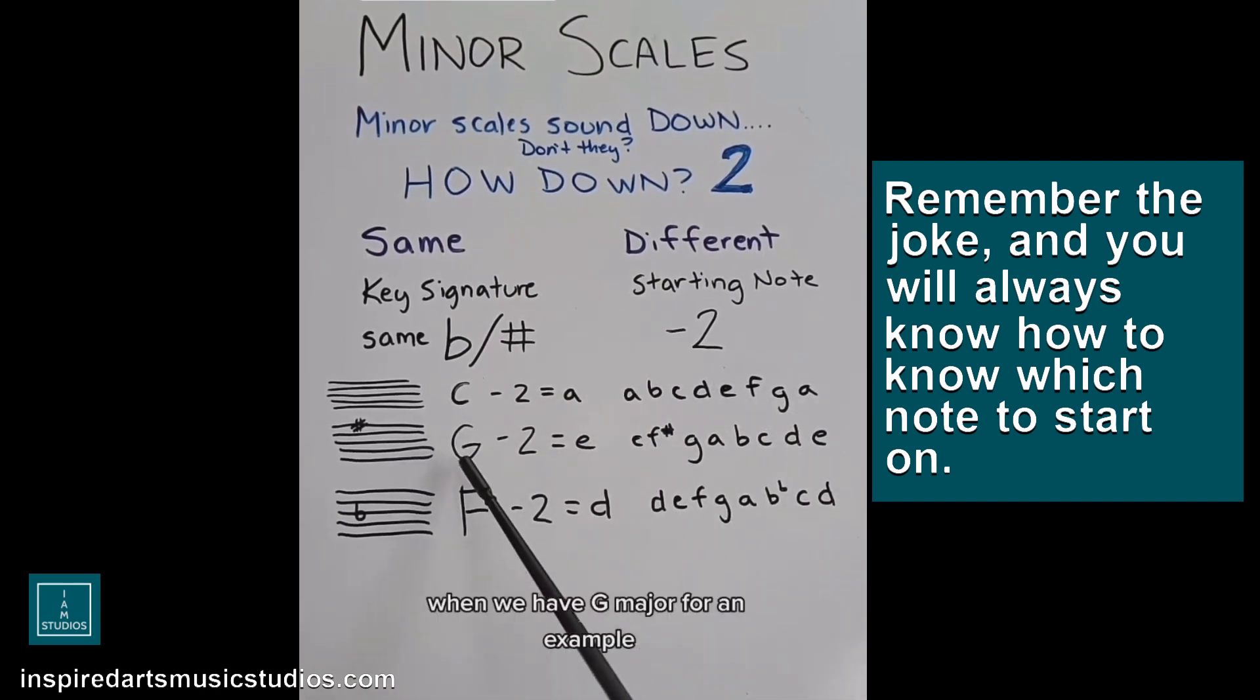When we have G major, for an example, G major has one F sharp as the key signature. And so G minus two, G, F, E. We start on E, but we do have still that F sharp because it's still part of the same key signature. So we start on E, and we end on E, and that's the E natural minor.